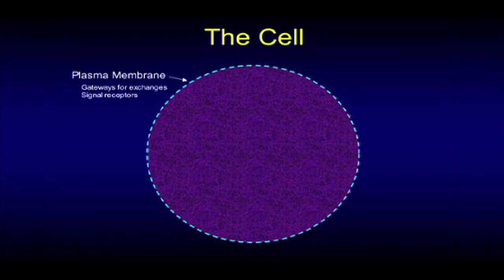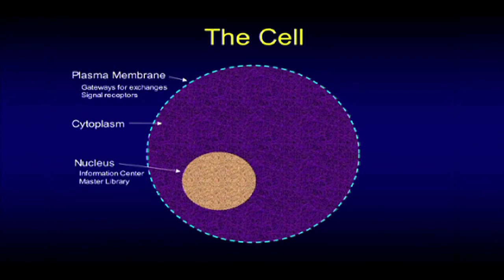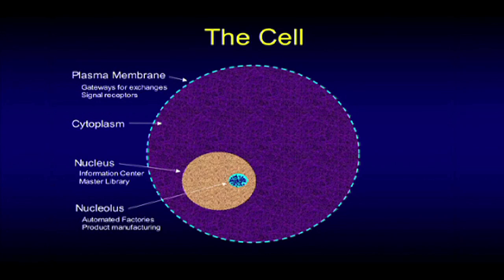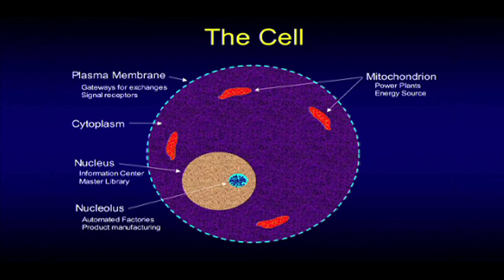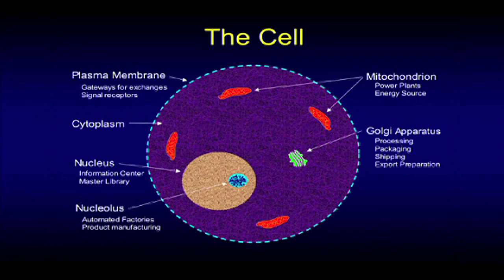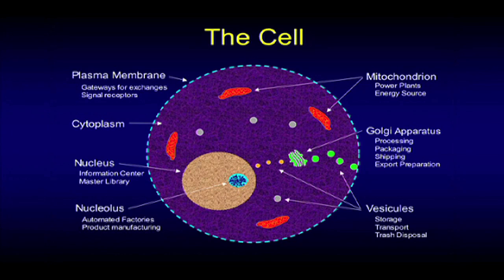The real cell is enclosed by a plasma membrane which has gateways that control exchanges going in and going out, with signal receptors. The internal material, called cytoplasm, contains the nucleus — an information center with a master library. There is a nucleolus, which contains automated factories that manufacture products used by the cell. There are mitochondria, which are the power plants, sources of energy. There is the Golgi apparatus for processing, packaging, shipping, and preparing for export. And there are other functions for storage, transport, and trash disposal.